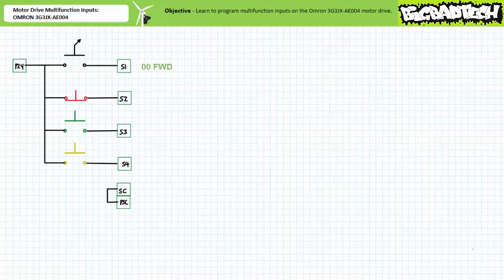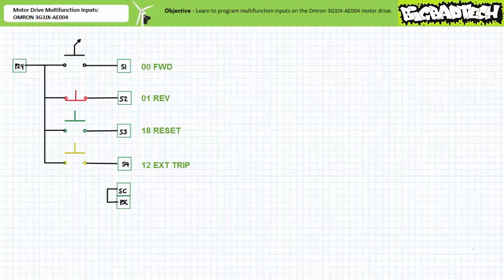The default function of input one is 00, forward. The default function of input two is 01, reverse. The default function of input three is 18, reset. The default function of input four is 12, external trip. Note the remote input device connected to input two is normally closed by nature, whereas all other devices are normally open. Upon handing off operation to the multifunction input terminals, the motor drive sees the presence of voltage on input two and rightly starts executing acceleration in the reverse direction as defined by the default function assigned to input two — reverse. The point again being that the motor drive is not a thinking machine, but something that does what it has been programmed to do.